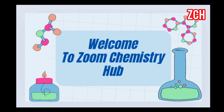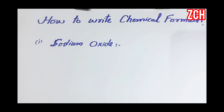Hello dear learner, welcome back to Zoom Chemistry Hub. Today we are learning how to write the chemical formula of a compound. For writing a chemical formula we must know two things: first, the symbol of the element, and second, the valency of that element.